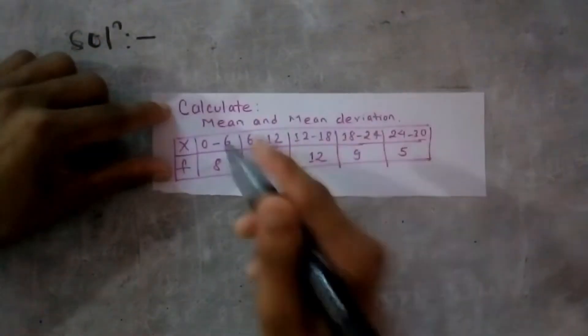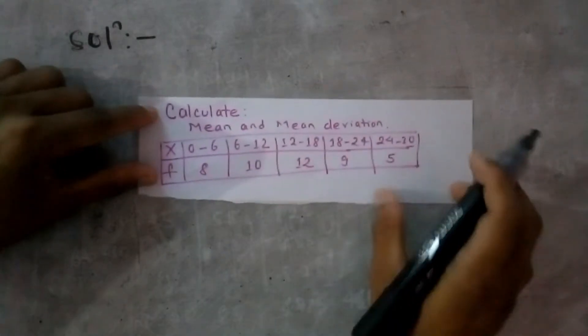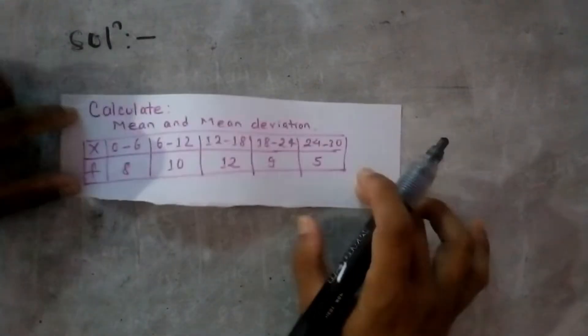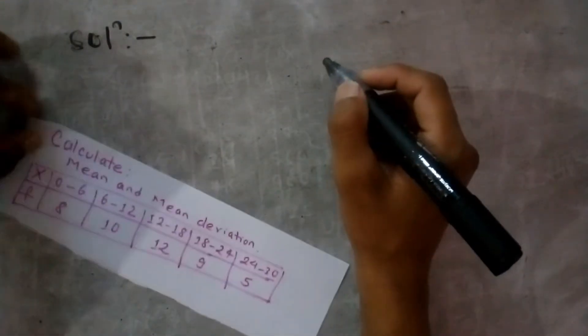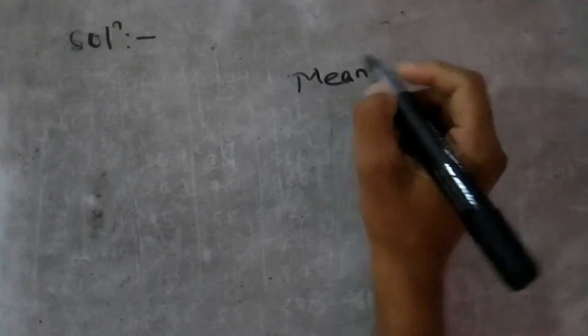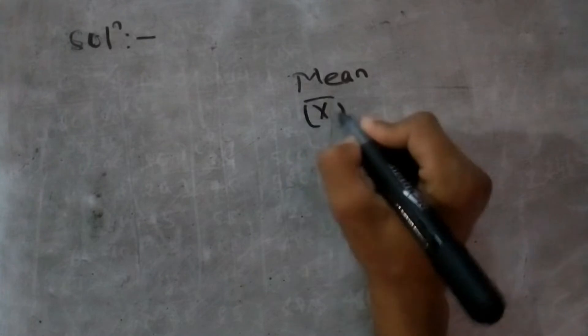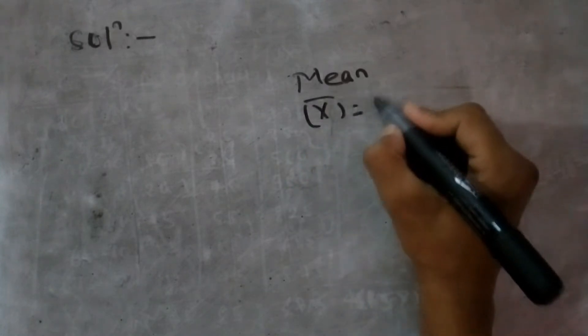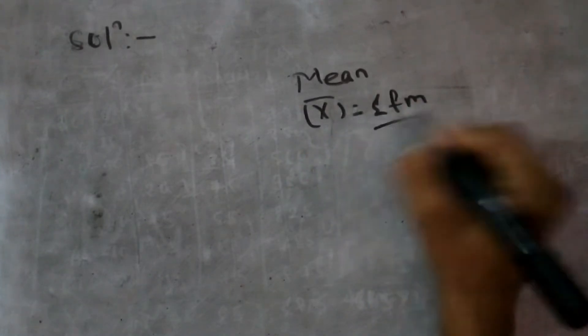First, I am going to show you mean and mean deviation. For continuous data, the mean formula is: mean equals summation of fm by n.